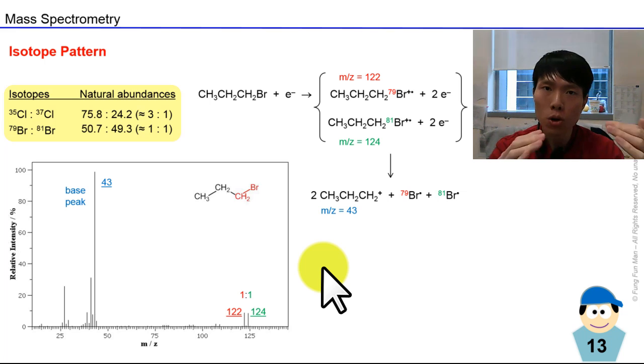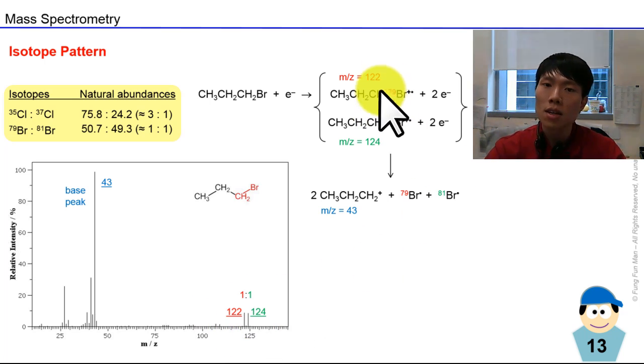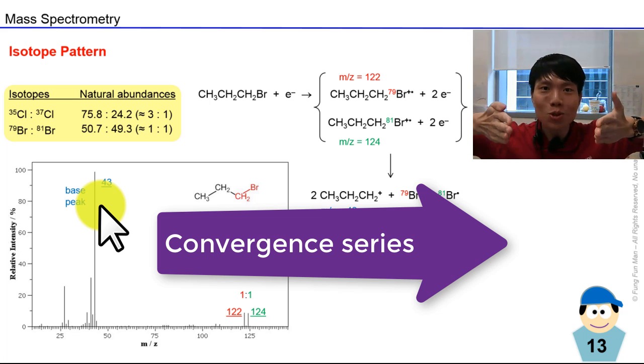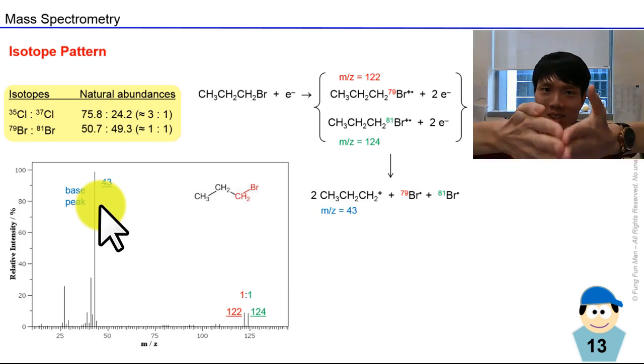This part gives m/z 122 for bromine-79 or 124 for bromine-81, and there's equal chances, so we see twin peaks at 122 and 124 in a 1:1 ratio. Now if you cut away the bromine, the remaining propyl cation doesn't have any more bromine, so this propyl cation stands alone at m/z 43. That's why it's the base peak - both fragments with different m/z values give rise to the same cation, so we have a higher probability of getting this fragment.